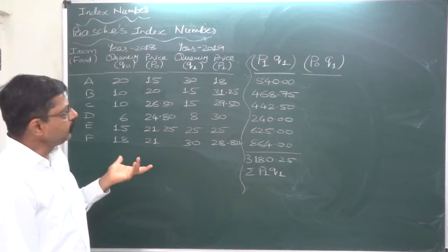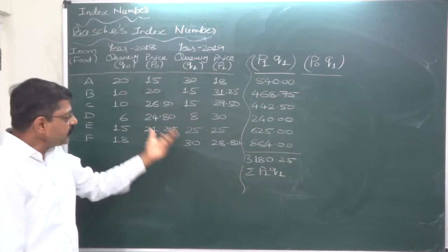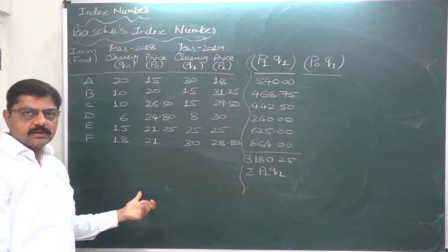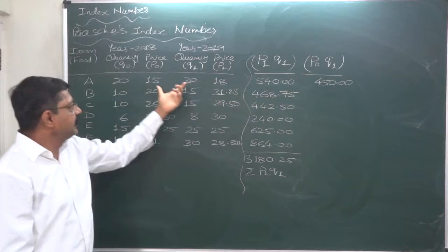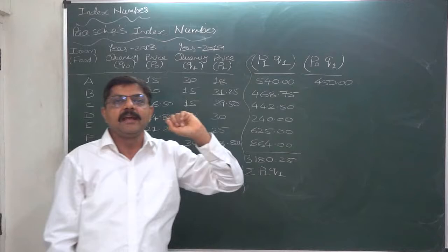Now notional cost of this much quantity at the price of base year. What if we purchase all these number of units at this quantity at this price? What would be the cost? 30 into 15 = 450. That means if there was no change in price of A, we would have paid 450 rupees instead of 540, but that can never be a reality because in reality the price of A has changed from 15 to 18 rupees per unit.